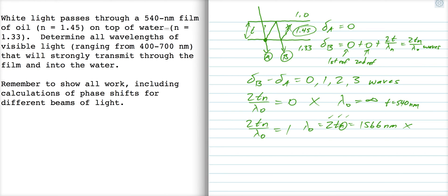Let's try another one. Let's try 2T over lambda naught equals 2. That gives us lambda naught is equal to just Tn. That's 783 nanometers, which is still outside the range of visible light, so we can't use that.